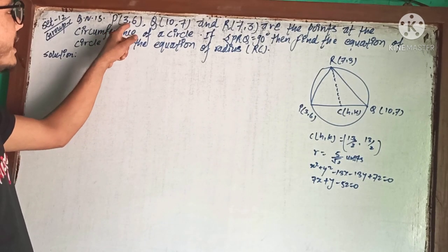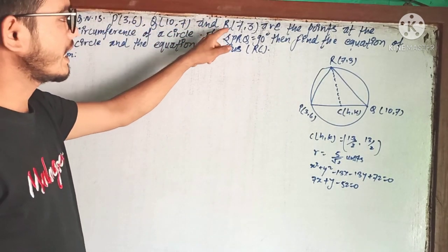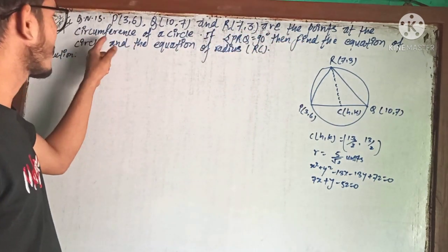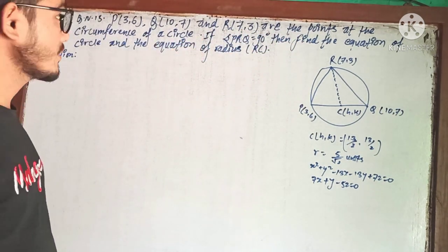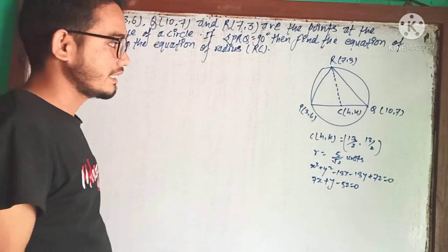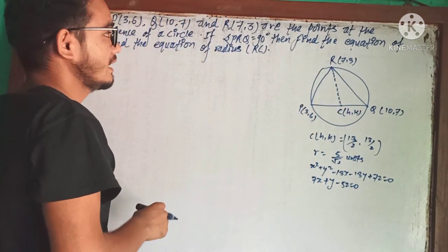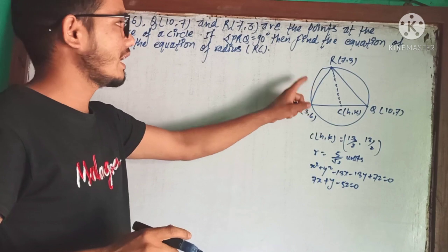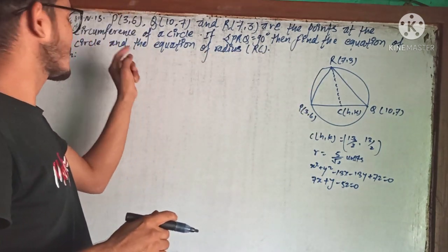Points P(3,6), Q(10,7), and R(7,3) are on the circumference of a circle. Angle PRQ is 90 degrees. Find the equation of the circle.